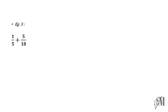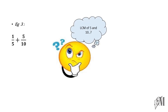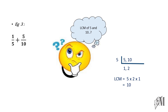Let us look into further examples: 1 over 5 plus 5 over 10. In this case, you have to think of the least common multiple of 5 and 10. I will recall how to find the least common multiple of two given numbers. You write the two numbers with a comma in between. Divide the two numbers by prime numbers and take the answer. Once you can't divide further, you multiply the divisors and the final answers. In this case, it is 5 into 2 into 1. The answer is 10. So, the LCM of 5 and 10 is 10.